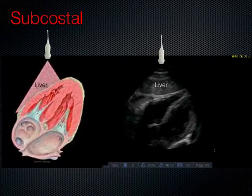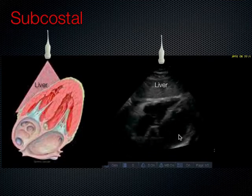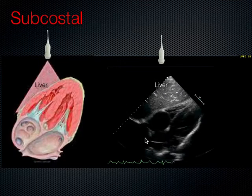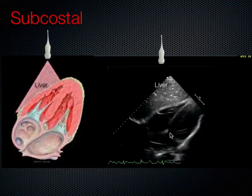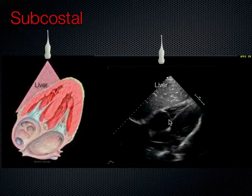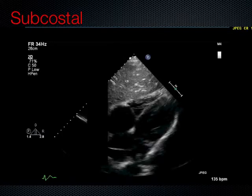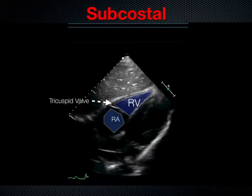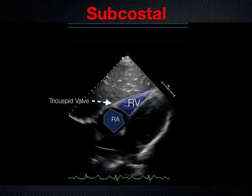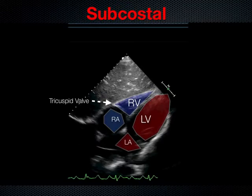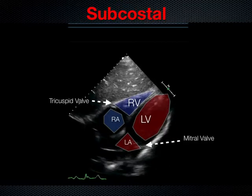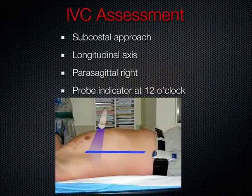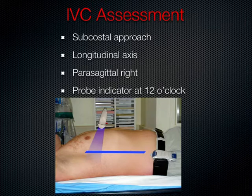Patients with a small liver make this view very difficult or impossible. In the subcostal four-chamber view we can see the right ventricle, left ventricle, right atrium, and left atrium. The interventricular septum is visible, and the right ventricle is seen anteriorly with the right atrium. Blood flows through the tricuspid valve from right atrium to right ventricle, and posteriorly we see the left ventricle, left atrium, and blood through the mitral valve. The pericardium is also easily visible.